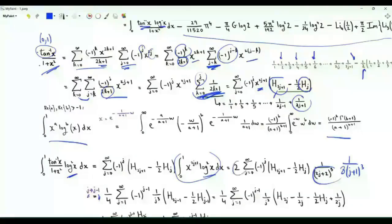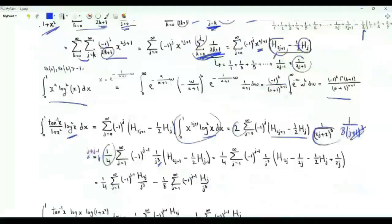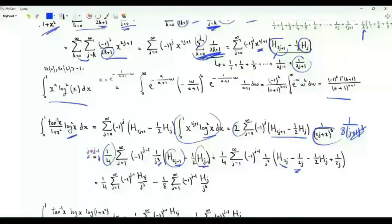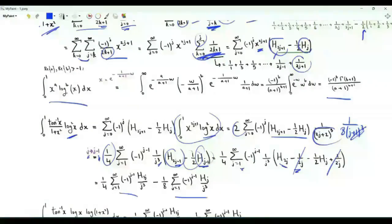Replacing j by j−1 gives a factor of 2/8 = 1/4, with (j+1)³ becoming j³. The bracket becomes H(2j−1) − (1/2)H(j−1). The harmonic number H(2j−1) equals H(2j) − 1/(2j), and H(j−1) = H(j) − 1/j. The term −(1/j)×(−1/2) = 1/(2j) cancels with −1/(2j), so these two terms vanish and we can split into two harmonic sums, which we carry to the next page.